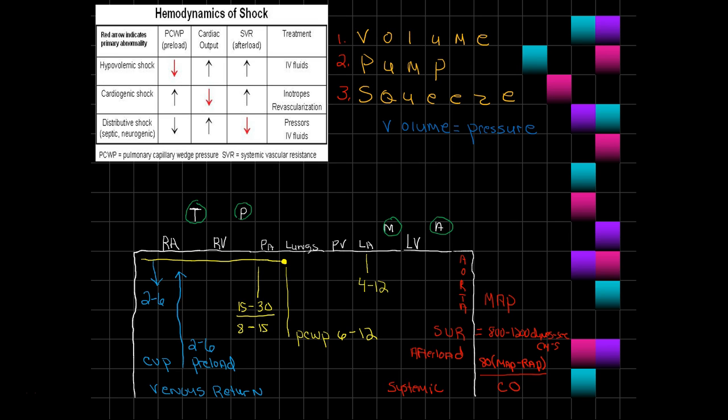Afterload is also, we look at systemic vascular resistance which is normally between 800 and 1200 dynes per second per centimeter to the negative fifth. And that's a reflection of afterload. But we can determine afterload by taking our mean arterial pressure and subtract our right atrial pressure, multiply it by 80 and divide it by our cardiac output. And that gives us an idea of what's going on on the systemic side of the equation. So if you look at the chart, hemodynamics of shock, it'll let you know what goes on in those particular states.